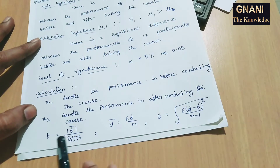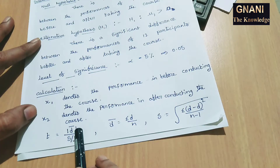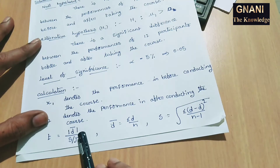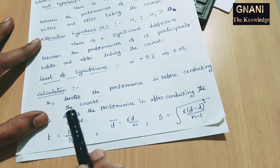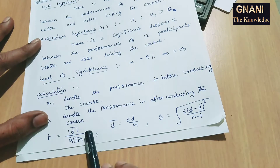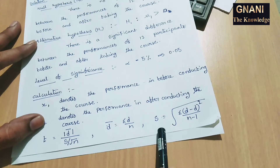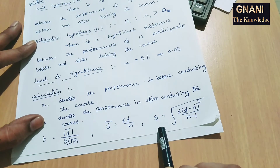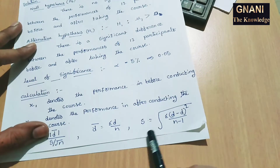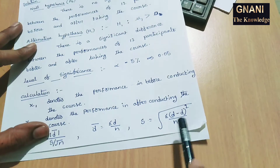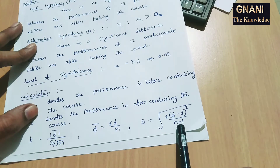What is the t-test formula? t equal to modulus of d-bar divided by s divided by root n. This is the t-test formula. d-bar is the average of the sample, so d-bar equal to summation d by n. And s means standard deviation. The standard deviation formula is: square root of summation of (d minus d-bar) squared by (n minus 1).